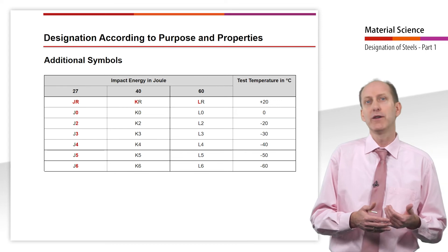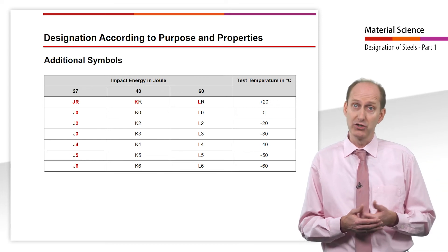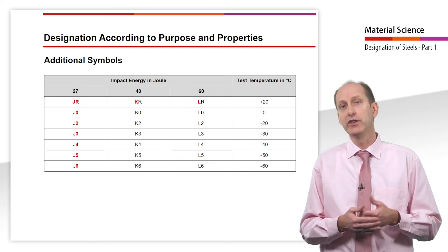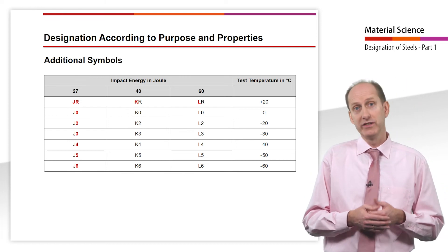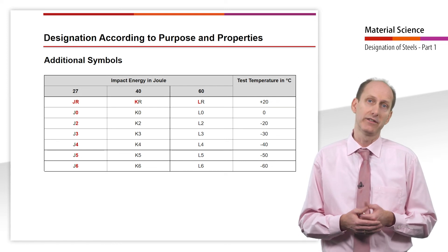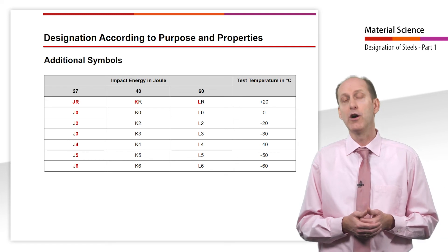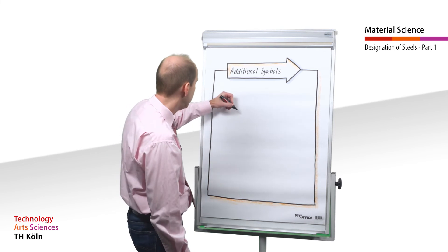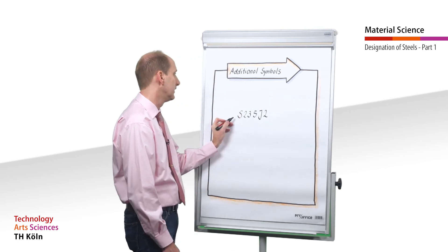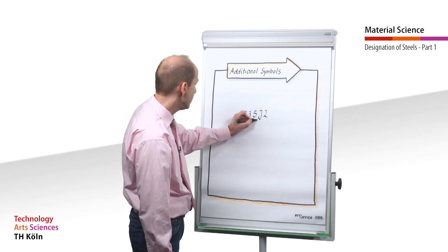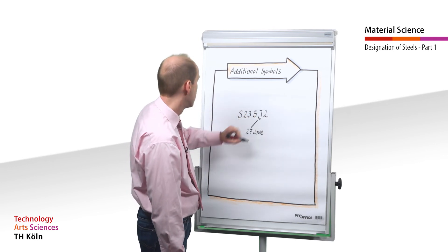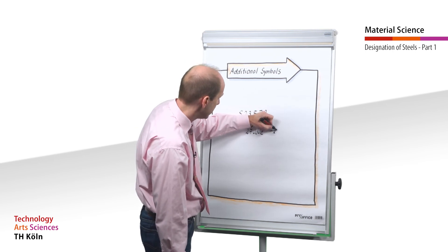The classification into quality groups is of particular importance, indicating the notch bar impact work at different test temperatures. We roughly differentiate three levels: J stands for a notch bar impact work of 27 J, K stands for 40 J, and L for 60 J. This is followed by the test temperature up to which this value is guaranteed. R stands for room temperature; all other values multiplied by minus 10 indicate the test temperature. So 4 stands for a test temperature of minus 40 degrees Celsius.